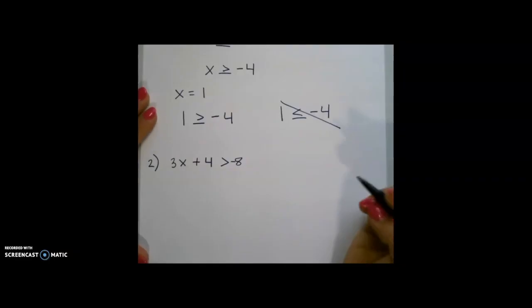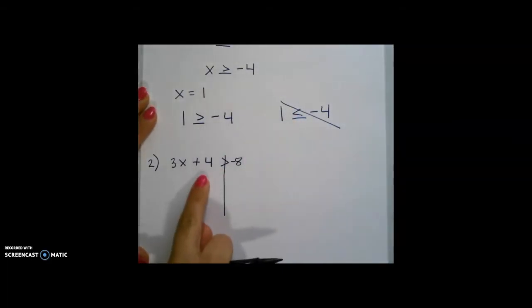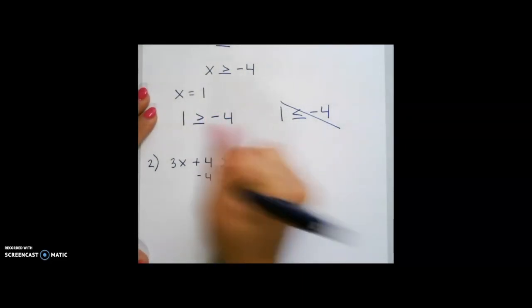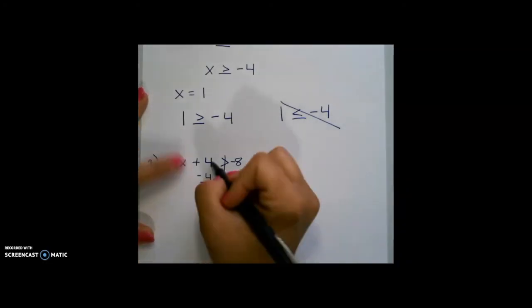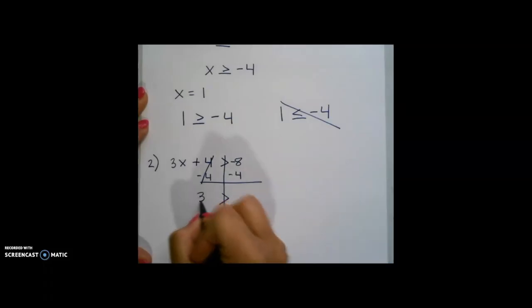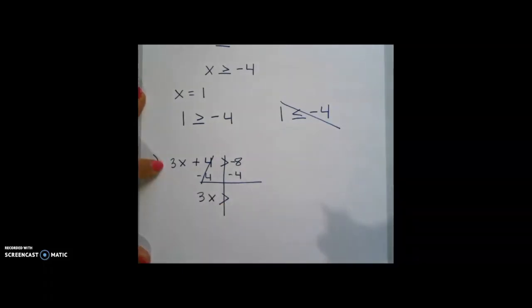Let's take a look at another example. We want to start again with doing the inverse of the addition or subtraction. So here I'm going to subtract 4 from both sides. 4 minus 4 is going to cancel out. Always remember to drop down your sign and bring down whatever you have on the left hand side.